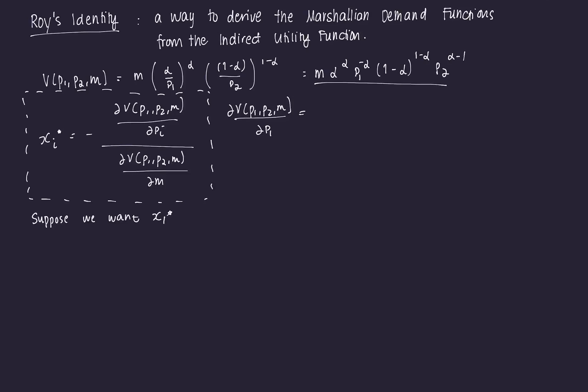So we derive it with respect to P1. We're going to be getting negative alpha M, alpha raised to alpha, P1 raised to negative alpha minus 1, times 1 minus alpha raised to 1 minus alpha, times P2 raised to alpha minus 1. Notice this derivative also tells us that if prices increase — say the price of good one increases — the indirect utility function decreases, since the sign is negative. This gives us the expected negative relationship between price increases and utility.